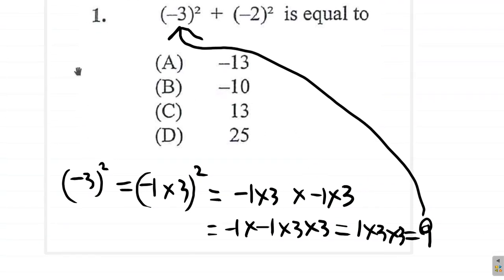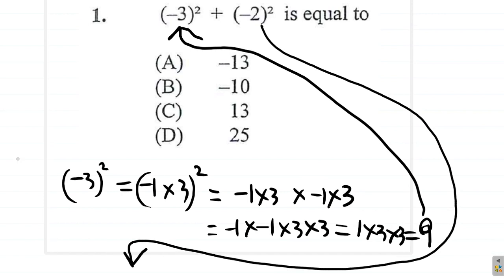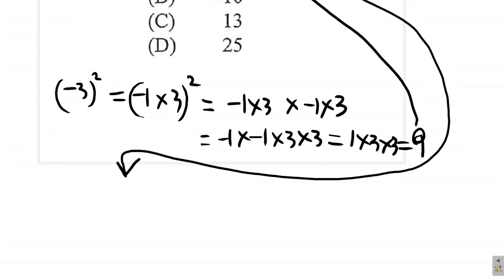Alright. Now, what about the negative 2 squared? The negative 2 squared means negative 2 times negative 2. Negative 2 means the same as negative 1 times 2. You see that? So, it's negative 1 times 2 times negative 1 times 2. Alright. So, it's negative 1 times negative 1 times 2 times 2. Now, remember, we're going through the details.